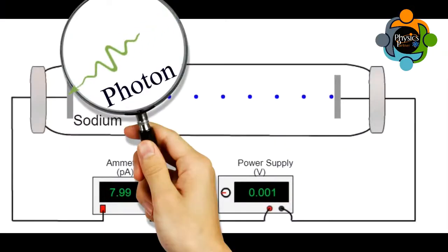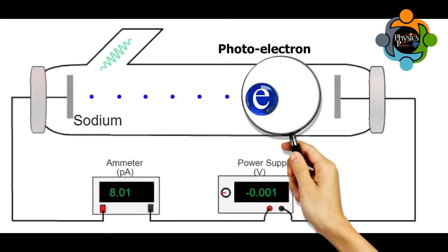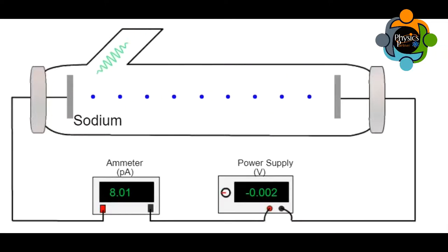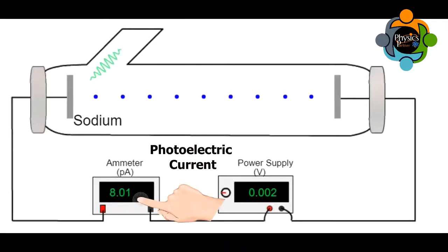Photo because of photons of light, and electric because of the movement of electrons in electric current. The electrons emitted from the metal surface are called photoelectrons, and the electric current produced by the photoelectrons is called photoelectric current.